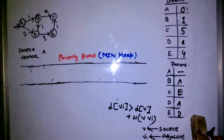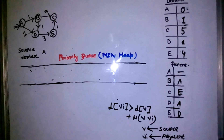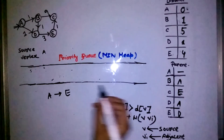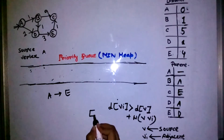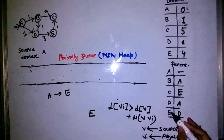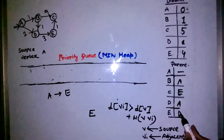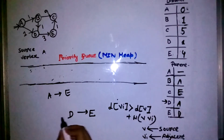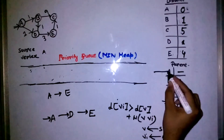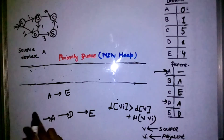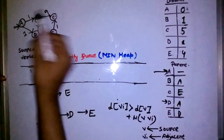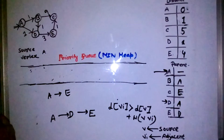Now, if someone asks how to print the shortest path from A to E, we use the parent array. Start by writing E as the end vertex. Look up E in the parent array — we get D. Look up D — we get A. Look up A — it has no parent, so we stop. The shortest path is A → D → E with a total cost of four.